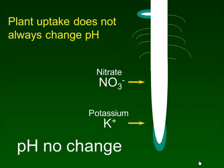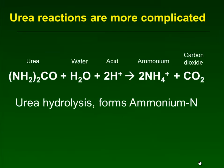Sometimes there is uptake of nutrients where the pH does not change. For example, the plant might take up a nitrate and a potassium at the same time, which has an overall neutral effect on both the root and the soil around it, so pH doesn't change in that case.